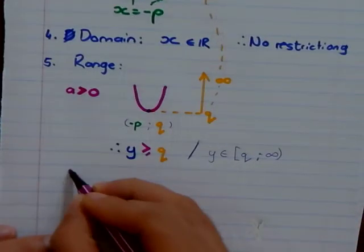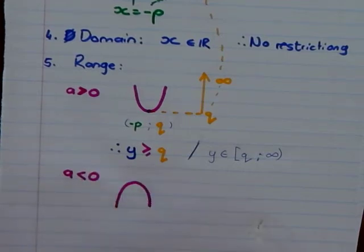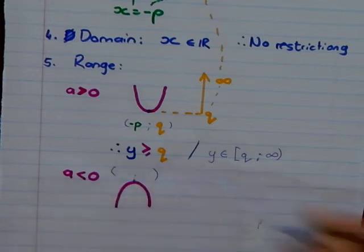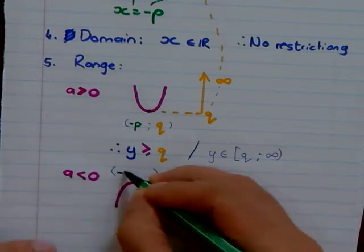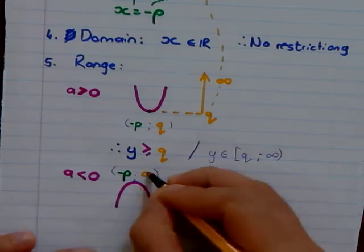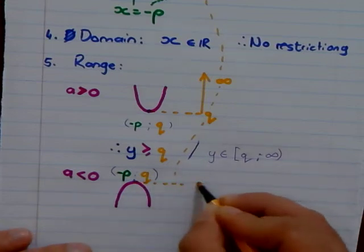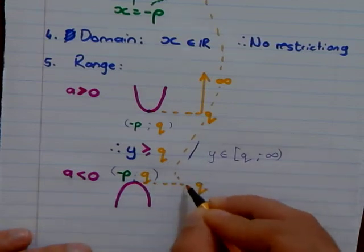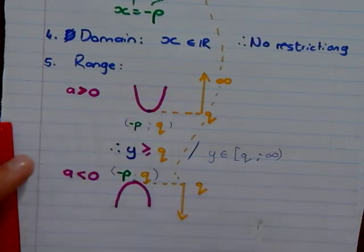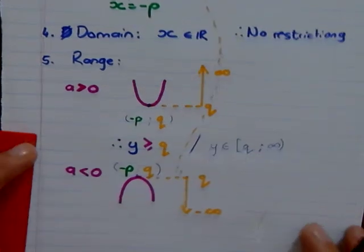Now when my graph is a sad face graph, let's say I have a zero, now we have a sad face graph. Again, my turning point is negative p, q. When my range focuses on my q. So from this point, that's my q value, up to, it goes down. My y go down. Therefore, negative infinity equals to the negative side of my graph.